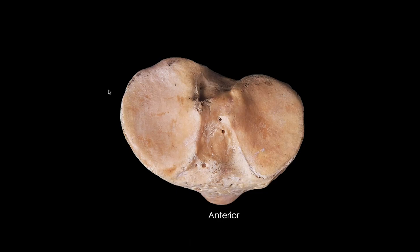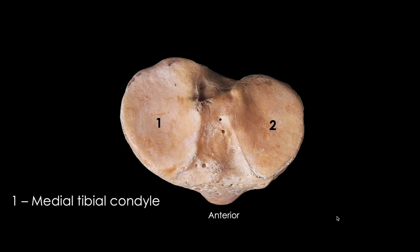Now we can see the superior view of the proximal tibia. If you look at these condyles, they are not the same size — the medial condyle is bigger than the lateral condyle and their shapes are different. This medial tibial condyle and this lateral tibial condyle have distinct forms that are anatomically significant.